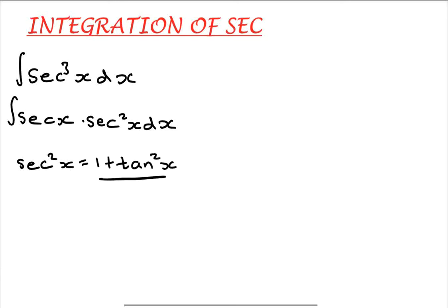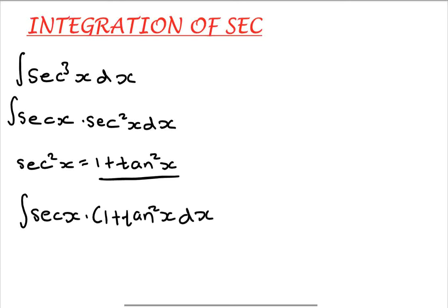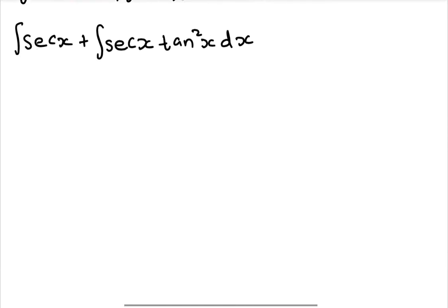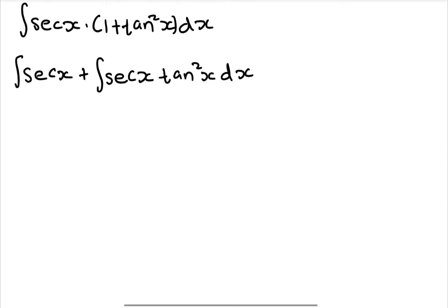Now substitute this into the integration, so it becomes sec(x) times the bracket. Substituting gives us sec(x) plus sec(x)tan²(x), and we now have two integrals: the first one I1 and the second one I2.